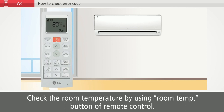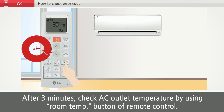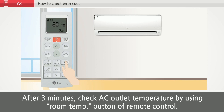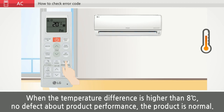Check the room temperature by using the room temp button on the remote control. After 3 minutes, check the AC outlet temperature using the room temp button on the remote control. When the temperature difference is higher than 8 degrees Celsius, there is no defect about product performance — the product is normal.